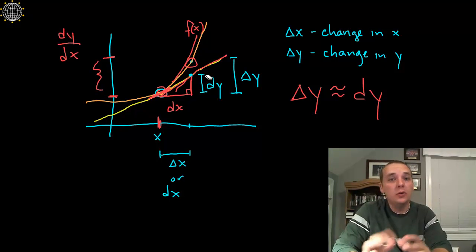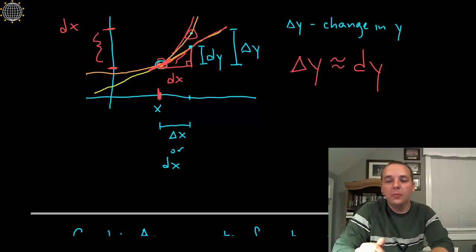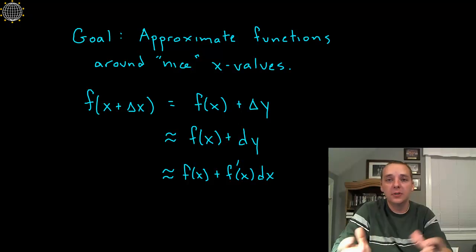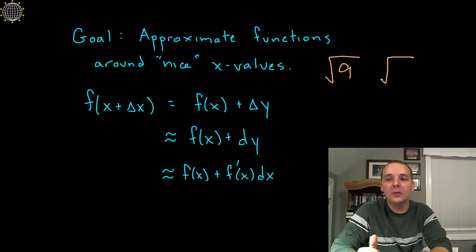Now what on earth are we going to be using this stuff for? Well, probably the most popular thing that we use differentials for is that approximation stuff I was talking about at the beginning of the video. So one of our main goals using differentials is to approximate functions around what we'll call nice x values. Now what do I mean by a nice x value? Well if you're going to use the square root function for example, what would be a nice x value to plug in? You would like to plug in a number like 9 because you can take the square root of 9. Would you like to take the square root of 8.7? Probably not.